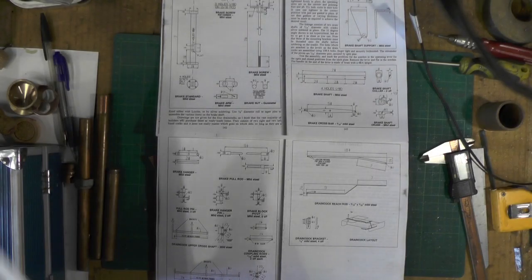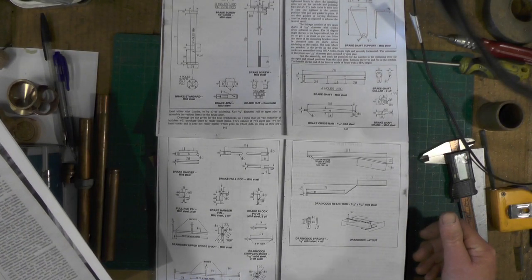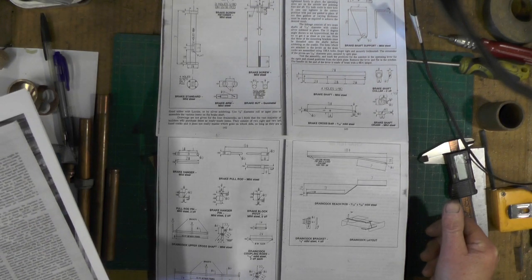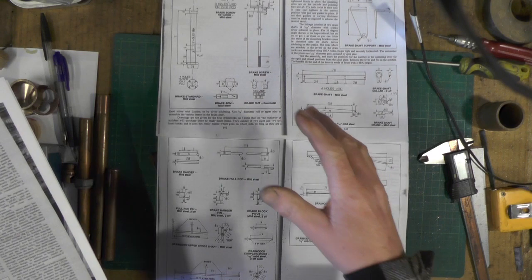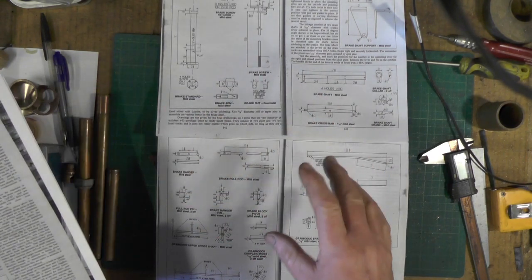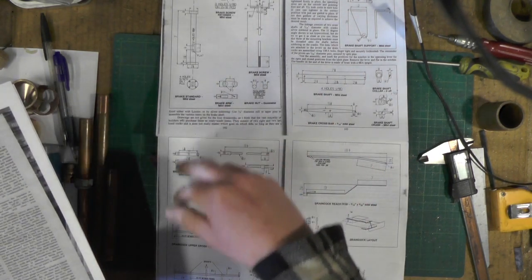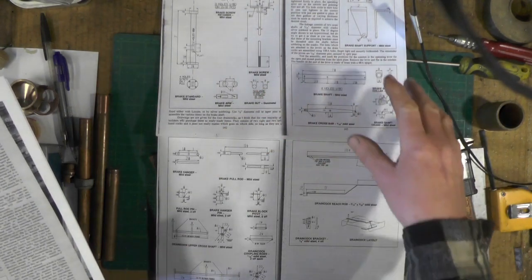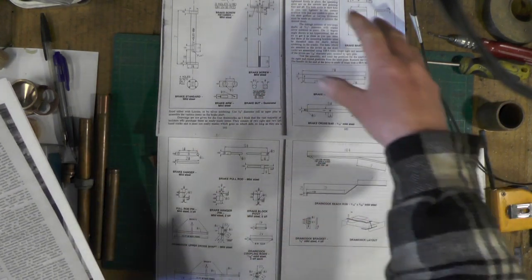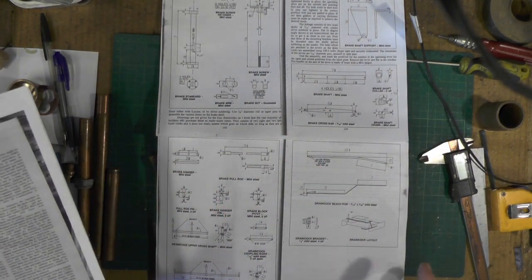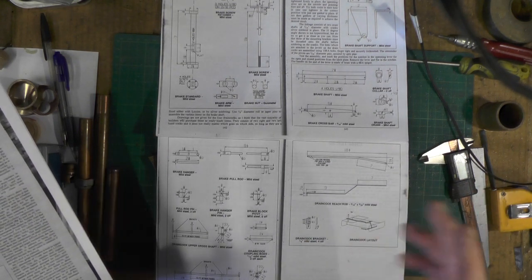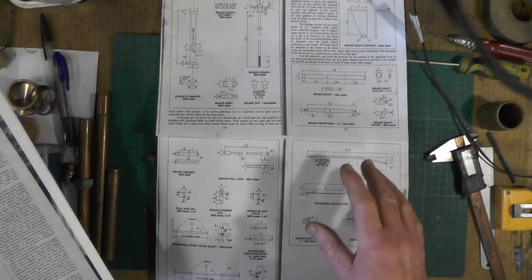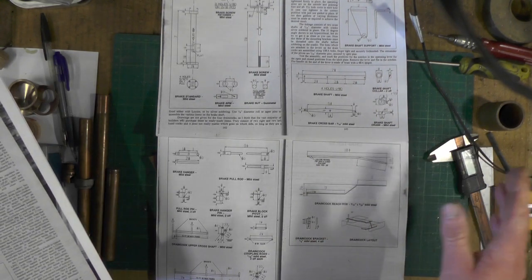Hey up everybody. Today I'm going to deal with the drain cocks for the cylinders. In the Sweet Pea book, the actual drain cocks aren't included - you've got the linkage for the manual drain cocks. I'll not be making that linkage. I'm going to go down the automatic drain cock route. I've got no experience in this, so I don't know if I'm doing the right thing or wrong thing here, but that's the route I'm going to take anyway.